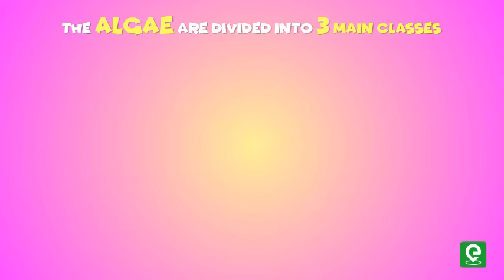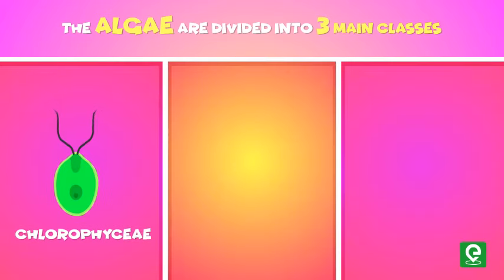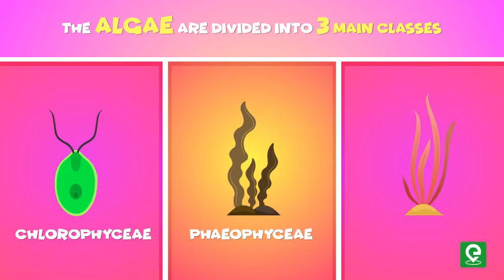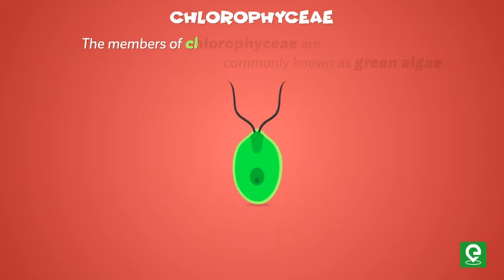Algae are chlorophyll-bearing, simple, thalloid, autotrophic, and largely aquatic organisms. The algae are divided into three main classes: number one, Chlorophyceae; number two, Phaeophyceae; and number three, Rhodophyceae.